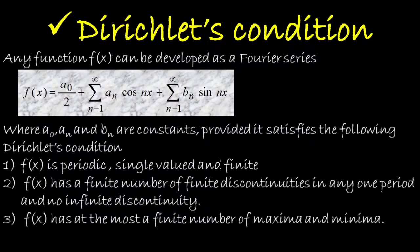Before moving on to the definition of Fourier series, let's look at the Dirichlet conditions — the important conditions for the existence of a Fourier series. Any function f(x) can be expressed as a Fourier series of the form: f(x) = a₀/2 + Σ aₙ cos(nx) + Σ bₙ sin(nx). This series consists of only cosine and sine terms, because the trigonometric functions repeat over an interval of 2π radians.